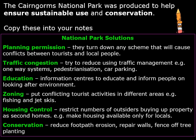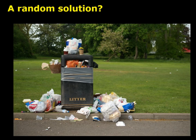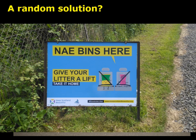Pause the video here until you've got these noted down, then carry on. Now, a random solution — this isn't at Cairngorms but is typical of a Cairngorm car park in summer. How would you solve this problem? Would you put more bins out? Would you have a bigger bin? The Cairngorms have actually removed rubbish bins — if you remove bins, people are more likely to take their rubbish home, and with a bit of encouragement this also works. When people take rubbish home, they are more likely to recycle it, and it saves the Cairngorms a lot of money. As the largest National Park in the UK, imagine having a van going around emptying all those bins daily, especially in summer — it will cost a lot of money.